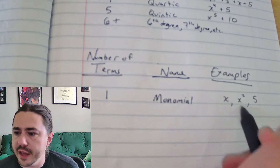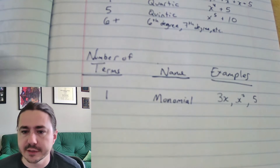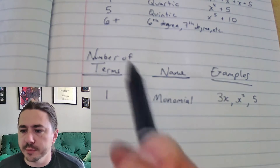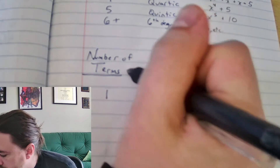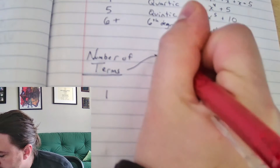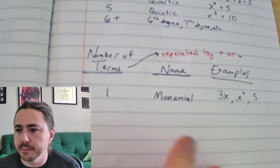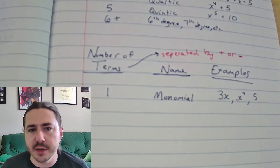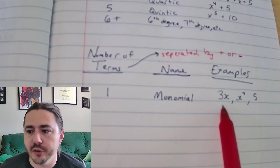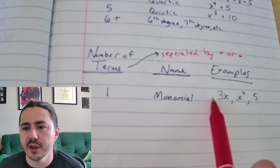You might have a coefficient on one of these terms — like 3x — that's still one term. Terms are separated by addition and subtraction, separated by either a plus or a minus. So if your term has a coefficient like 3x, there's no plus or minus there, so it's considered a single term.